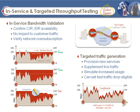The test traffic striped over customer traffic can be set to a drop-eligible state so that if something has to be dropped, the customer's traffic is still unaffected. These are the two forms of traffic generation in the unit for in-service testing: one is pure in-service, and the other is incremental traffic addition.